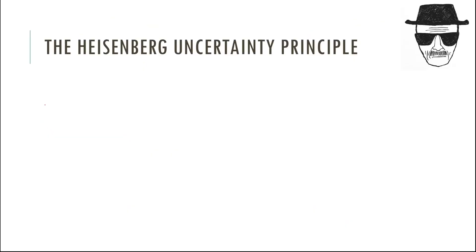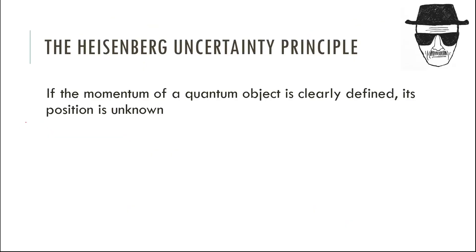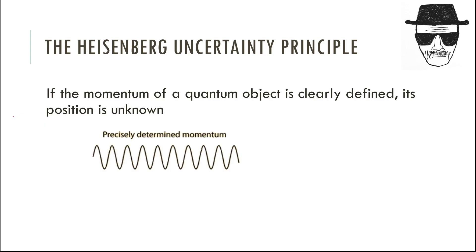We're talking really about Heisenberg's uncertainty principle. Think about what we know so far about particles in quantum physics, because they're not really particles at all - everything can be described by a wave function. A particle, quote unquote, is a thing that has momentum. Anything that has momentum has an associated wavelength, says the de Broglie hypothesis. The wavelength of a thing is Planck's constant divided by the momentum.